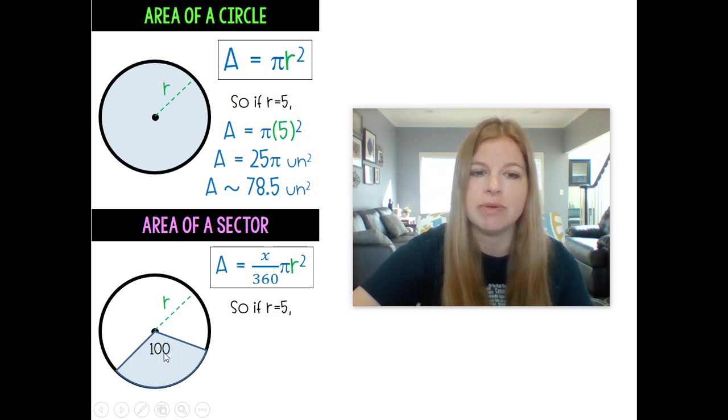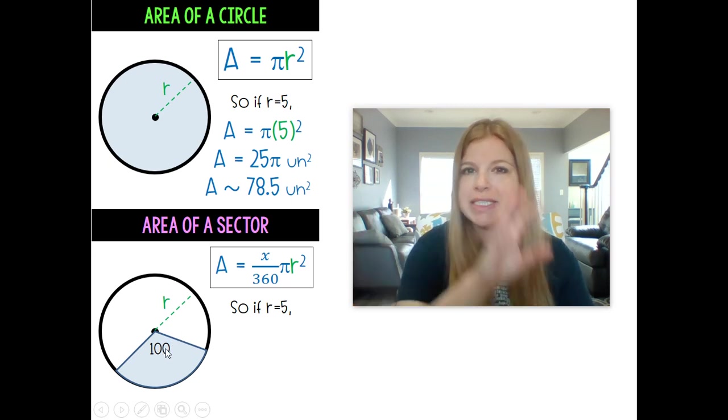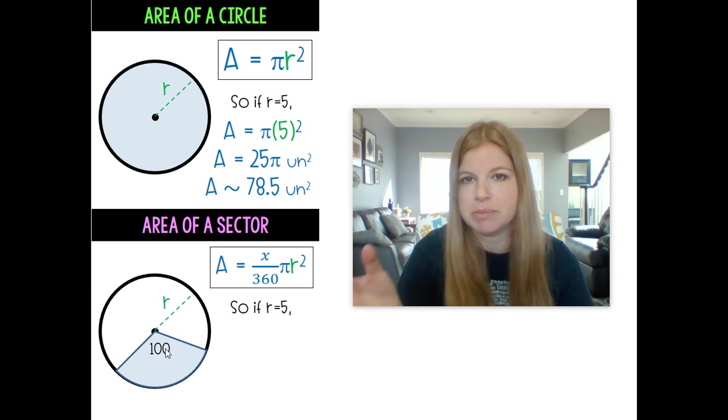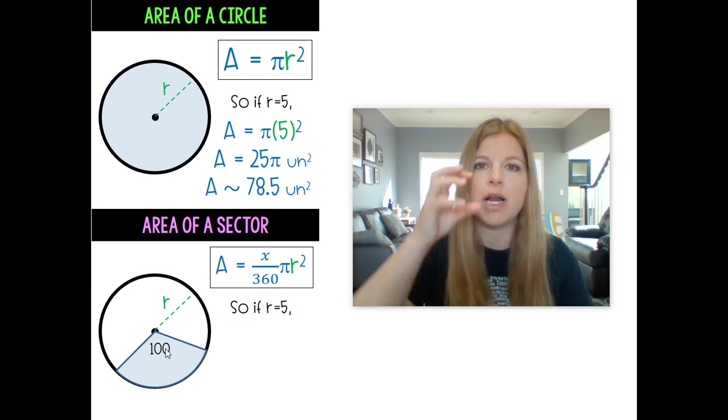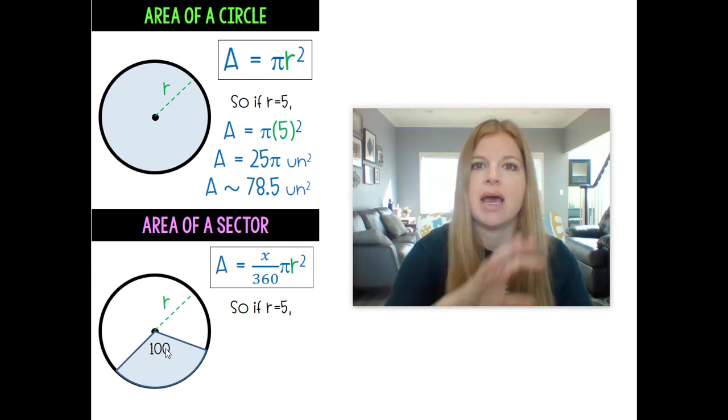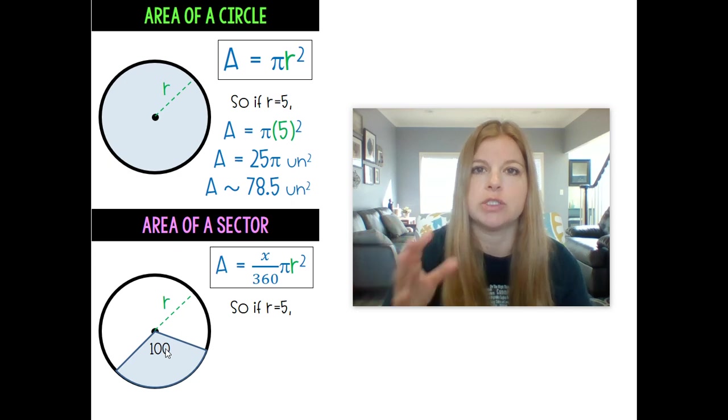So I don't want the full 360 out of 360 times pi r squared. I want whatever portion out of 360 multiplied by pi r squared so I get that fraction of the area.